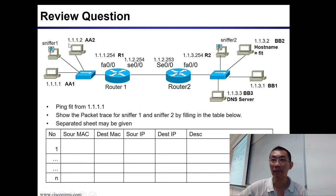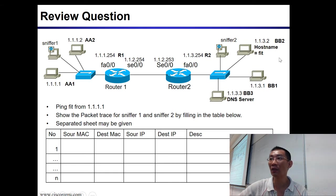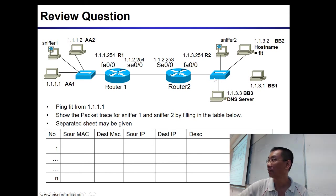In this network you only have AA1, AA2, and R1. And in this other network you have BB2, BB1, BB3, and R2. Over here you won't see AA1, AA2, or R1 — you will never see them. Similarly over there you will never see BB2, BB1, BB3, or R2.